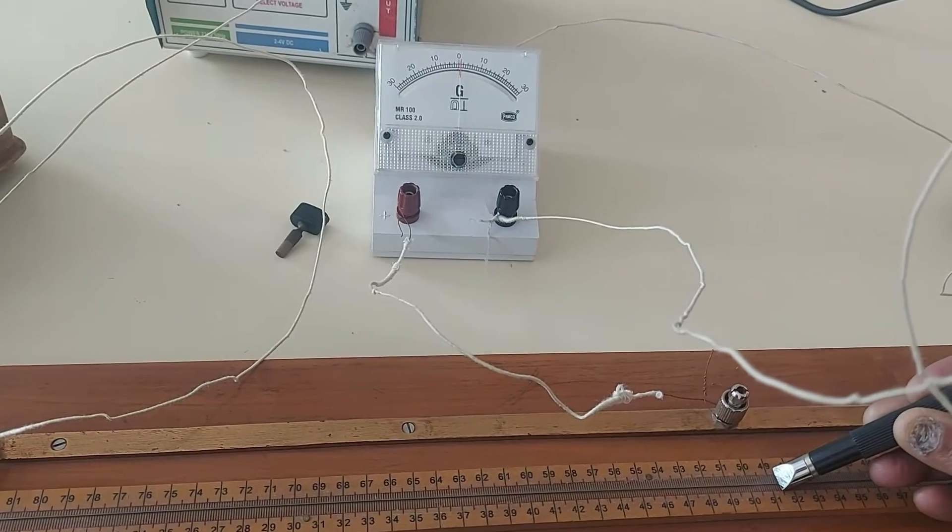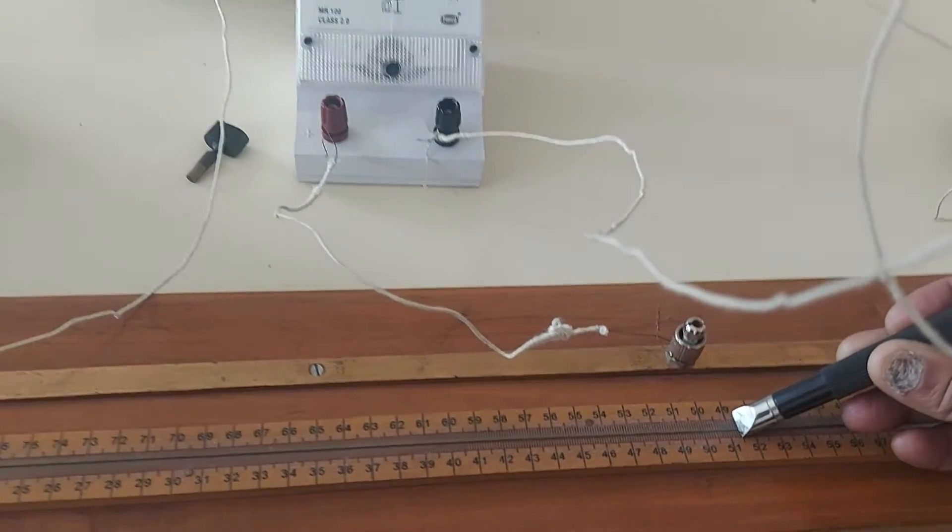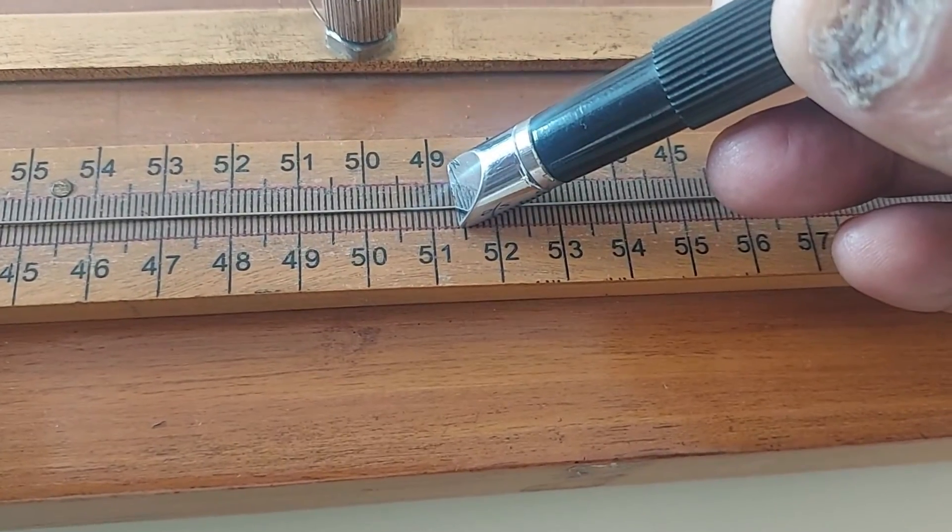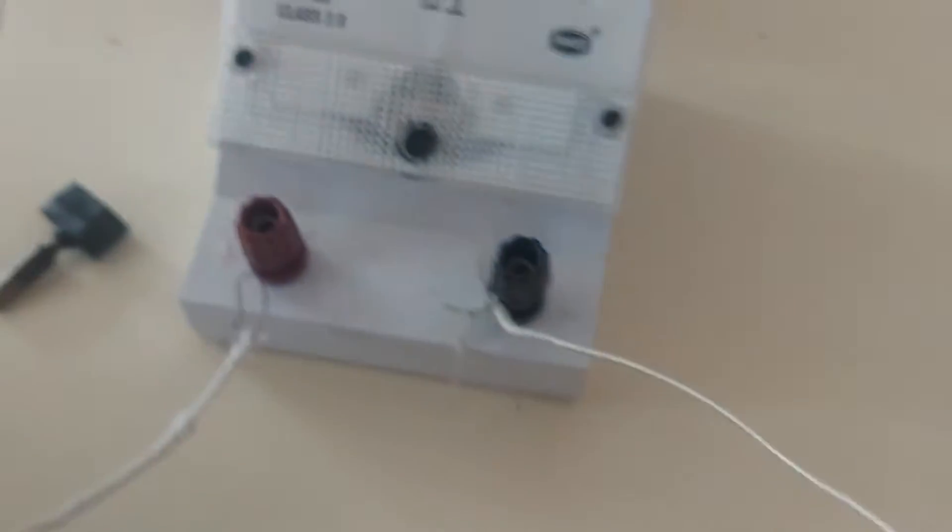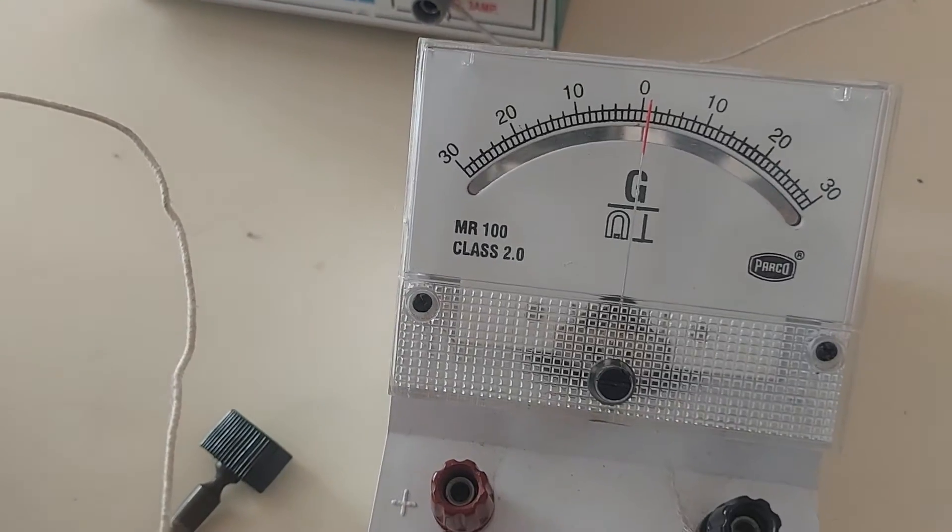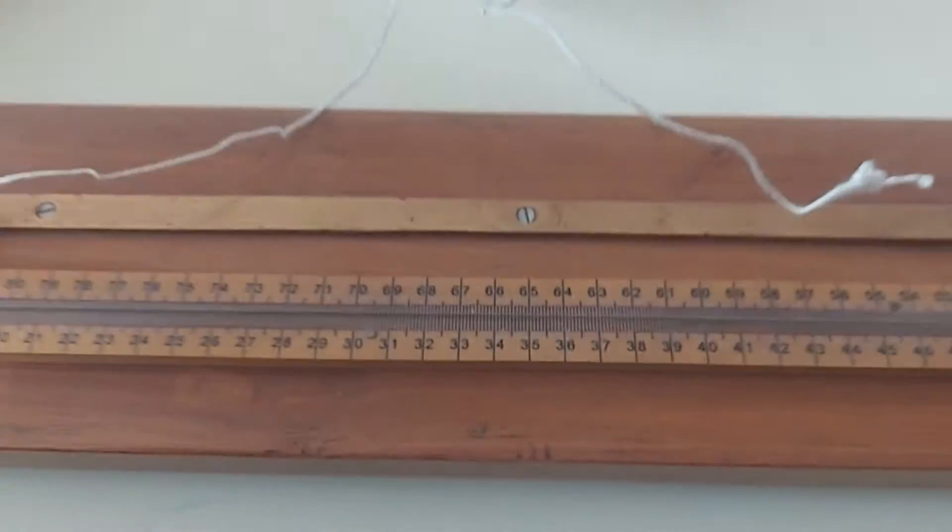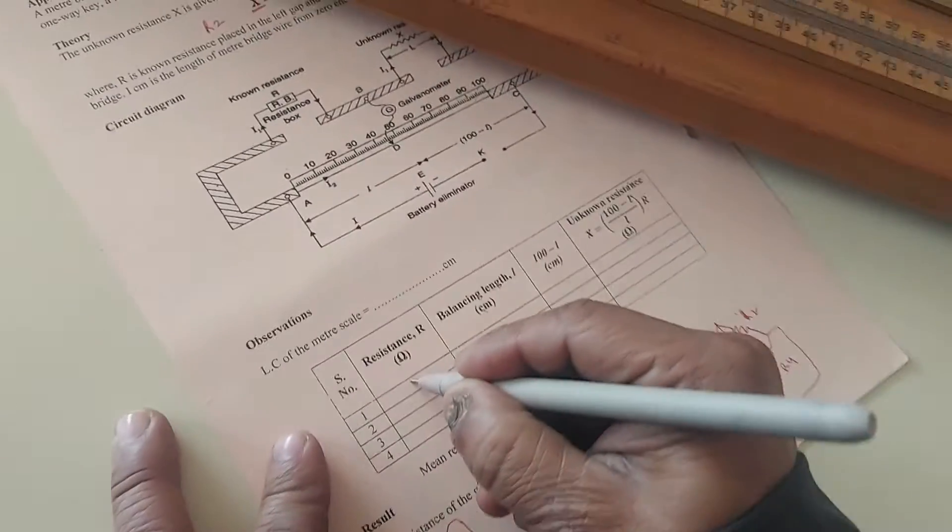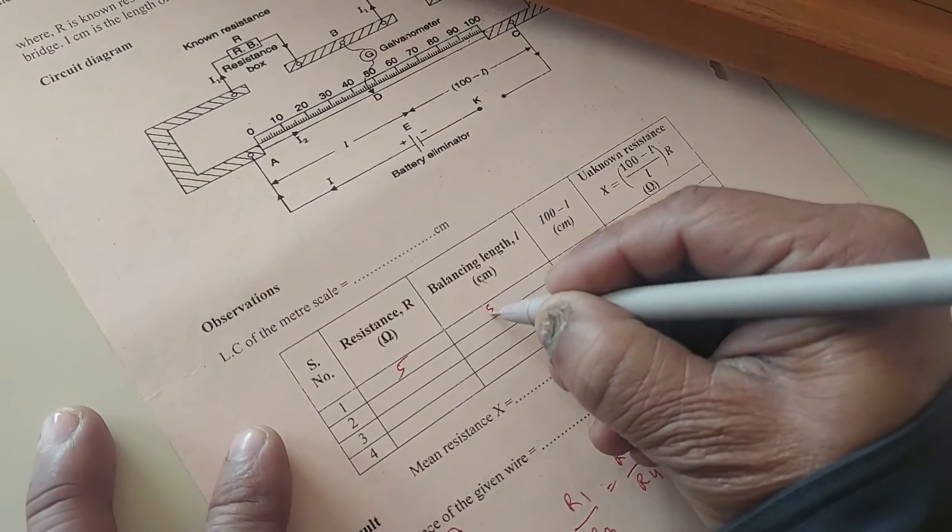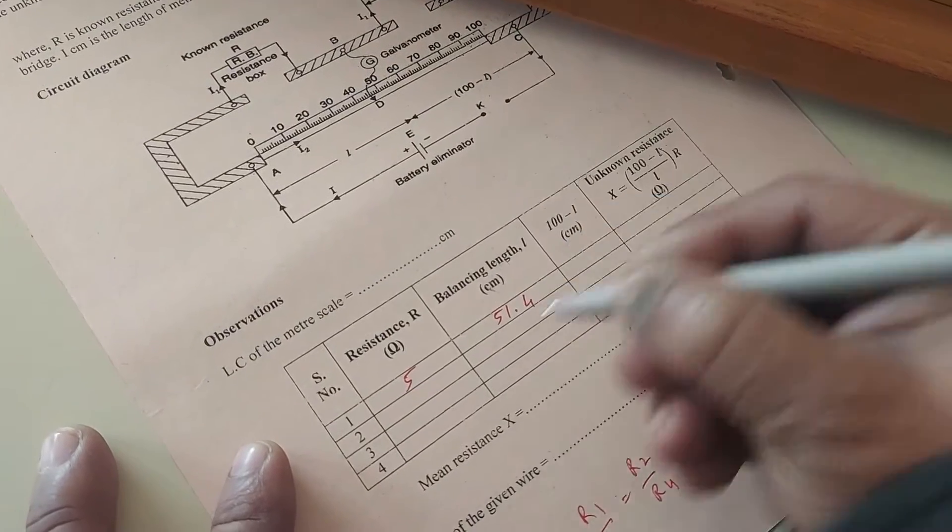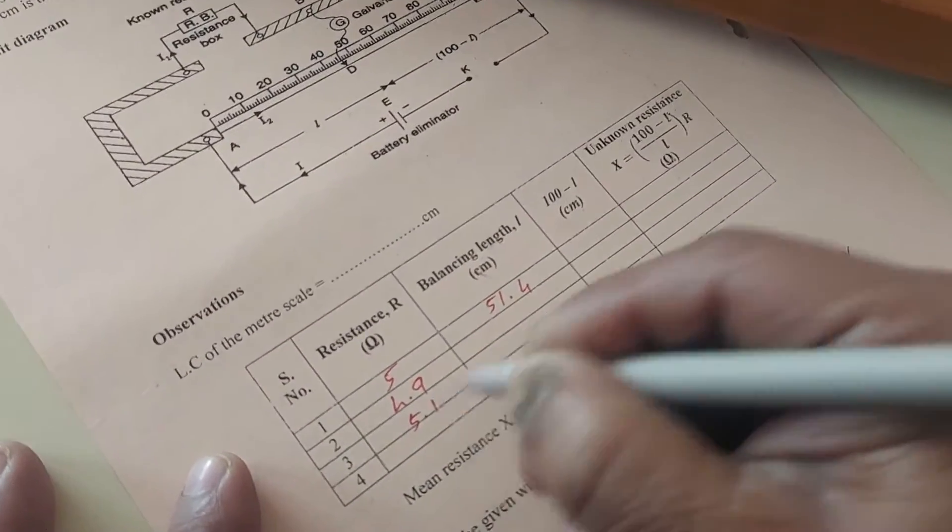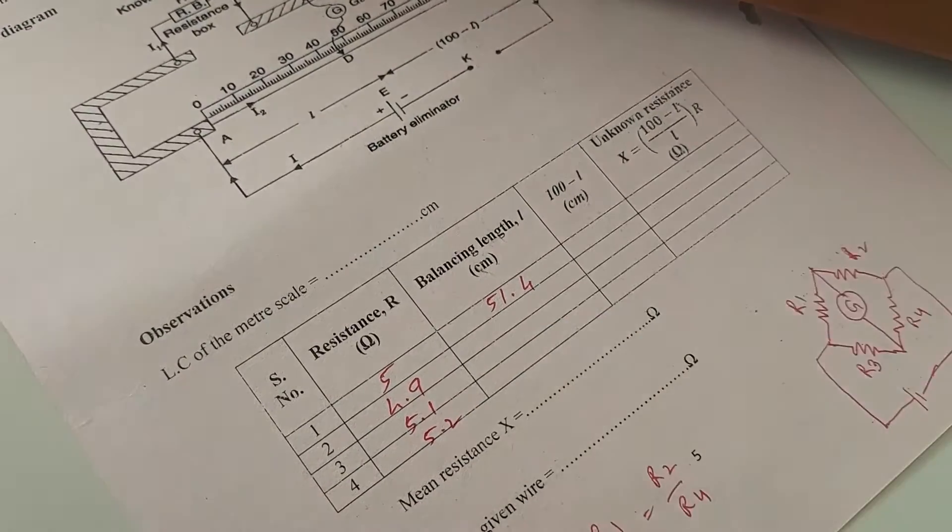When the bridge is balanced, only then the ratio of resistance is applicable. So see the reading? 51.4. It is 51.4 and the reading in the galvanometer is 0. So this is our first observation. Switch off the circuit. Don't keep it on. This will heat up the wire.